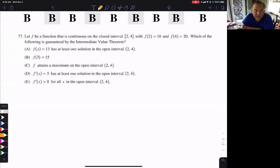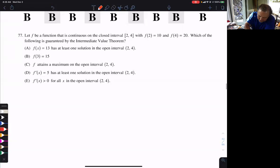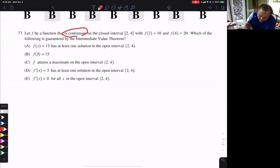This is 2012, number 77, and they're talking about a continuous function on a closed interval. You're given the endpoints. What's guaranteed by the intermediate value theorem?